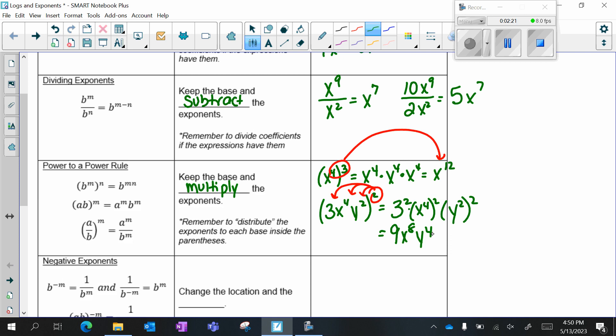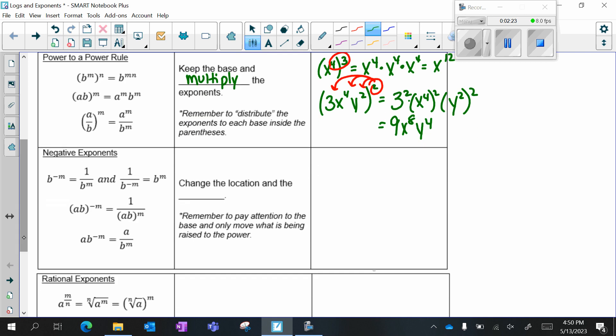For negative exponents, we change the location and we change the sign. And you have to be careful that you only change the location of the base. So for example, if I have 4x to the negative 2, the 4 is my coefficient, the x is the base. So I'm only moving the base. So this would be 4 over x squared.